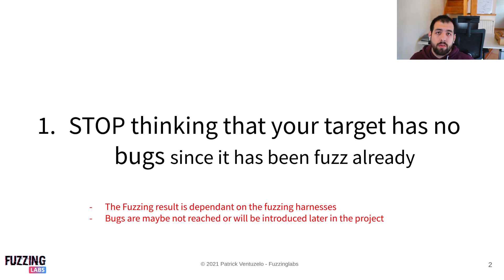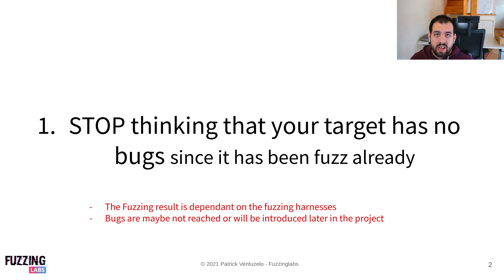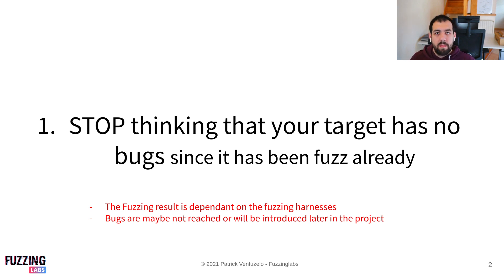That's also one reason why we often say fuzzing should be part of the CI — the continuous integration — because the more code you write over time, the more bugs you will have. It makes sense to do fuzzing all the time. And if you want to target a really old library, keep in mind that it may be interesting to focus on the new parts of the code that have been added. For example, with libpng, or a video/audio library, a new codec that's been introduced could be really interesting to target, since new code may bring new bugs.